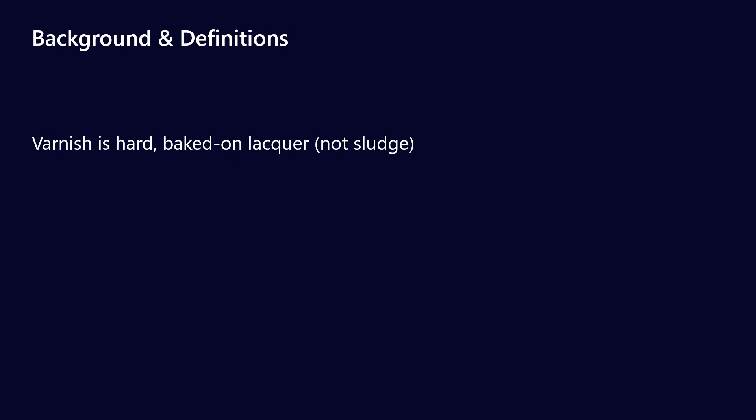Some background and definitions before we start. When we talk about varnish, we're talking about the hard baked-on lacquer — we're not talking about sludge. Sludge can probably be wiped off with a rag; varnish can't really be removed in that way. Varnish is also formed predominantly by the breakdown of the antioxidant additives — lubricant breakdown byproducts are what cause varnish.